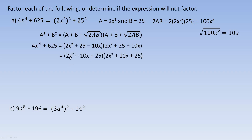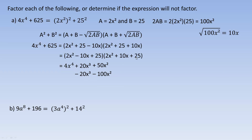We normally write trinomials in descending powers of x, so I'm going to rewrite it with 2x squared first, negative 10x second, and 25 at the end. So there are the factors of this. To demonstrate that these are the factors, we expand: 2x squared times 2x squared is 4x to the fourth. Then 2x squared times 10x is 20x cubed, and 2x squared times 25 is 50x squared. Now for negative 10x by each term: negative 10x times 2x squared is negative 20x cubed, negative 10x times positive 10x is negative 100x squared, and negative 10x times 25 is minus 250x.